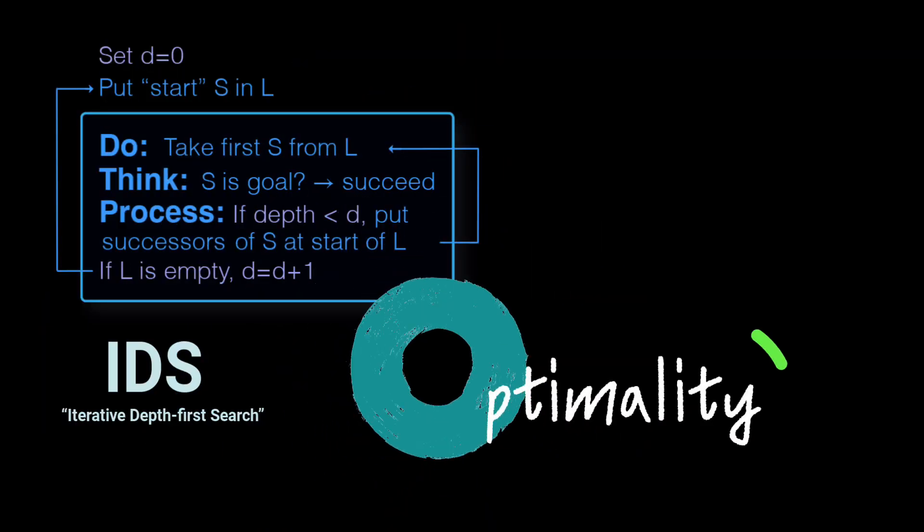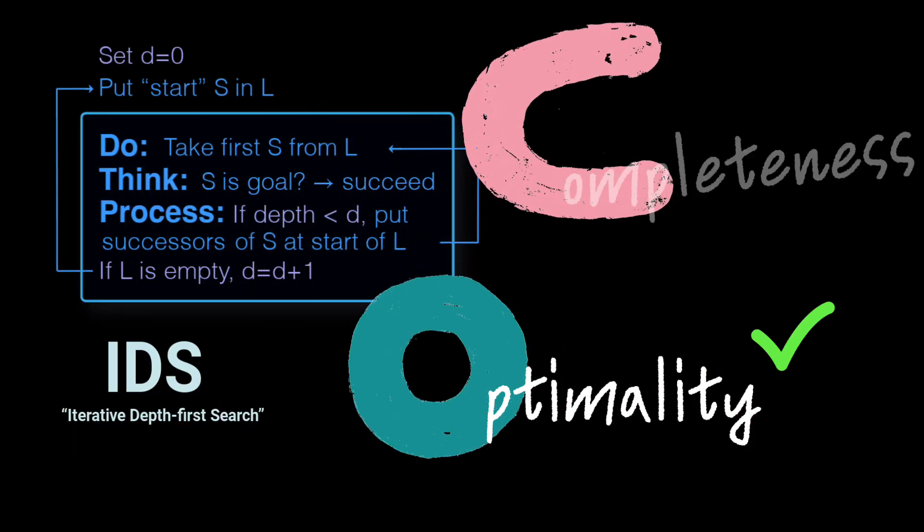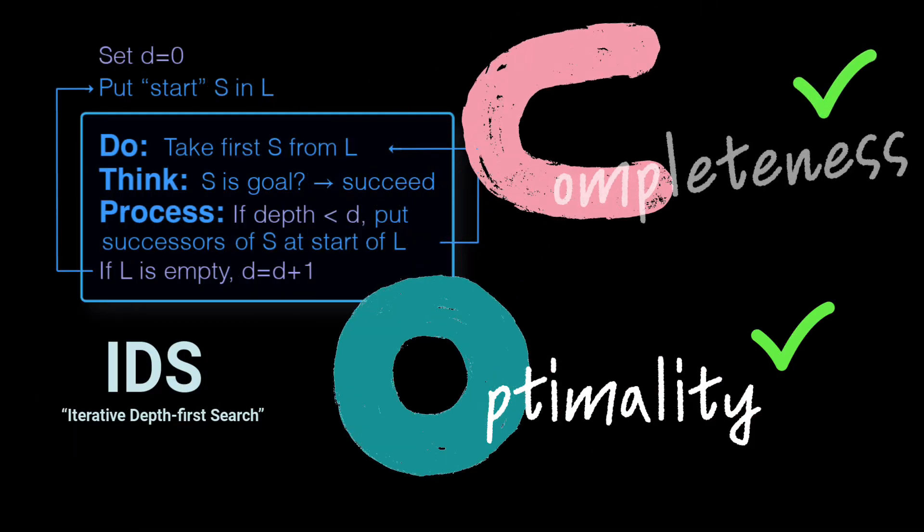First, it's optimal, so it finds shorter solutions before longer ones. And it's complete. It won't get stuck in infinite loops.